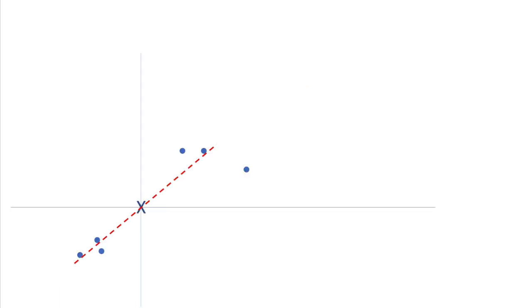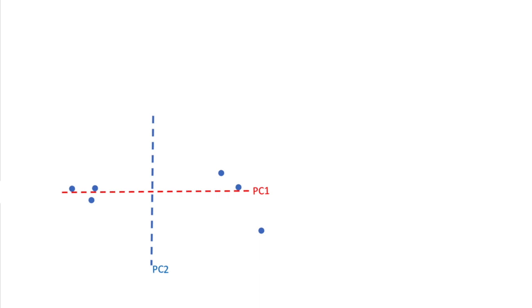Once we have drawn our line by maximizing the sum of squares distances, this will serve as principal component number one. To get principal component number two, we simply draw a line that passes through the origin that is perpendicular to principal component number one. Now we can abandon our original x and y-axis and rotate this graph until principal component one serves as the new x-axis and principal component two serves as the new y-axis. We have now drawn our principal component graph.